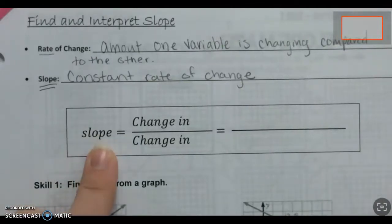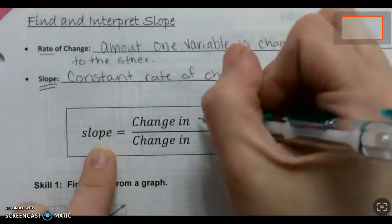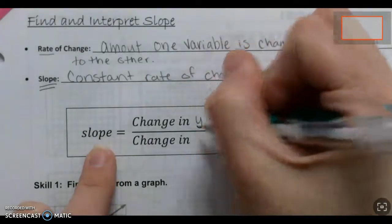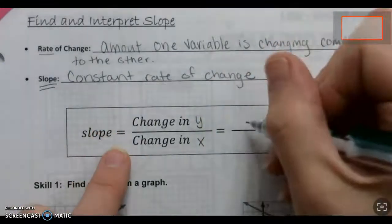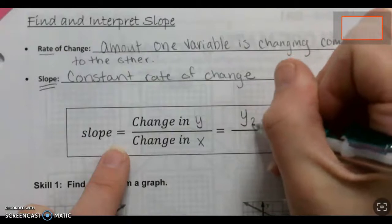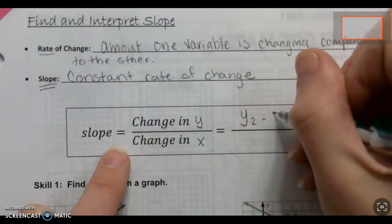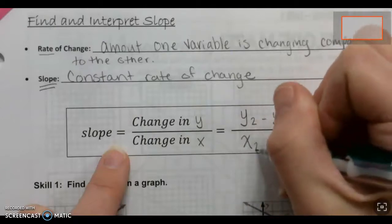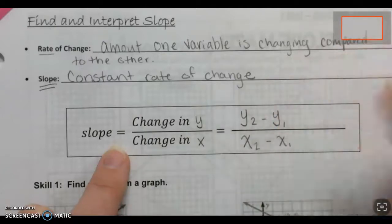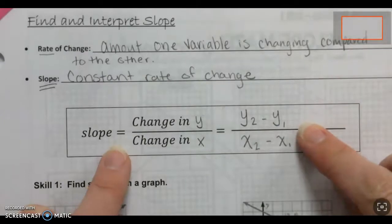So our slope, our constant rate of change, is going to be the change in the y numbers over the change in the x numbers. It's normally written out as y sub 2 minus y sub 1 over x sub 2 minus x sub 1. We're going to get into that more on the back side of this page.